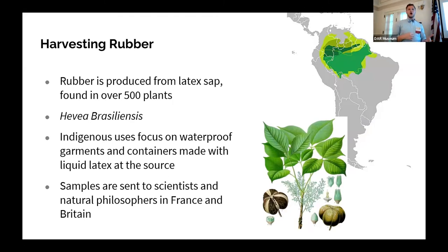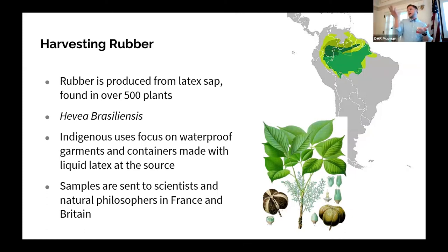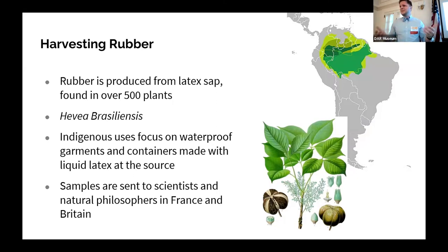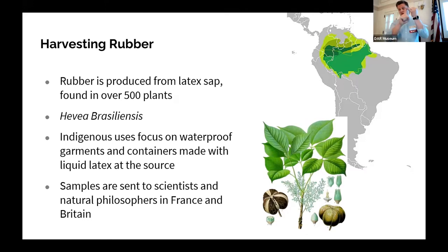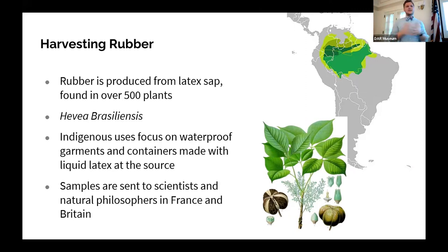Indigenous uses really focused on waterproof garments, created at the source: as soon as the sap comes out of a tree, you coat either a pre-made garment or, in the case of overshoes, dip a foot into it, allow it to dry, and through subsequent dippings build up layers into a more significant shoe. The problem is that when exposed to open air, latex coagulates over time, and every attempt to transport liquid latex back to Europe resulted in either a solid useless block arriving, or because it is organic, it would rot and spoil on the way.